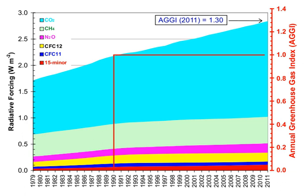Examples of the atmospheric lifetime and GWP relative to CO2 for several greenhouse gases are given in a summary table. The use of CFC-12 has been phased out due to its ozone-depleting properties. The phasing out of less active HCFC compounds will be completed in 2030.